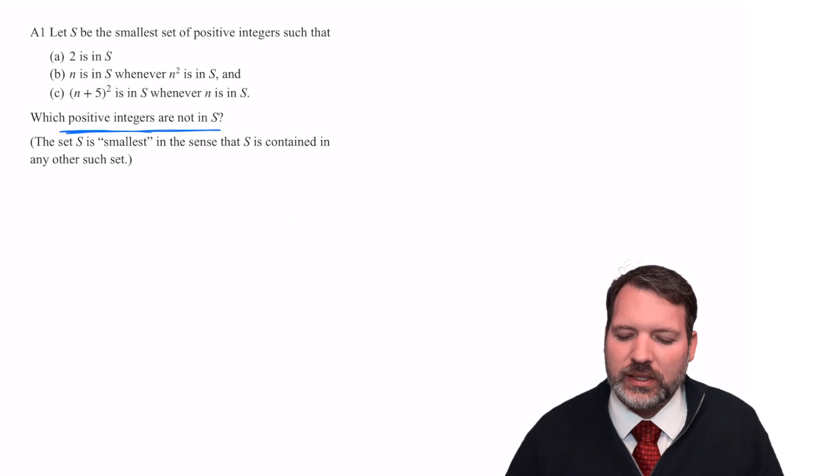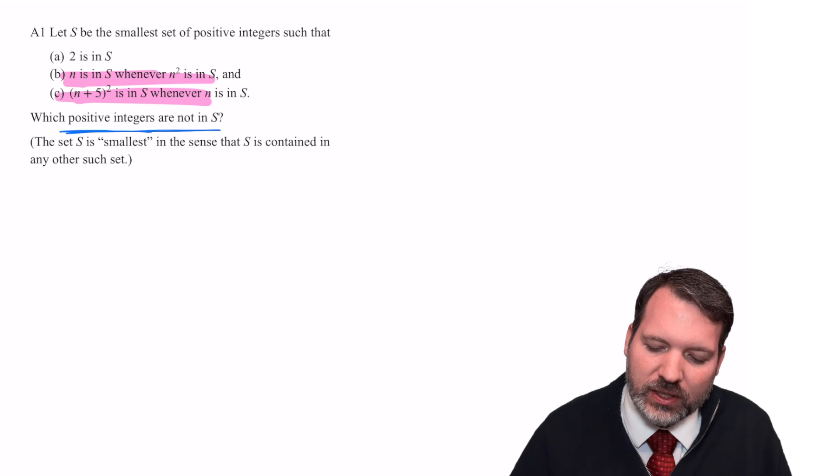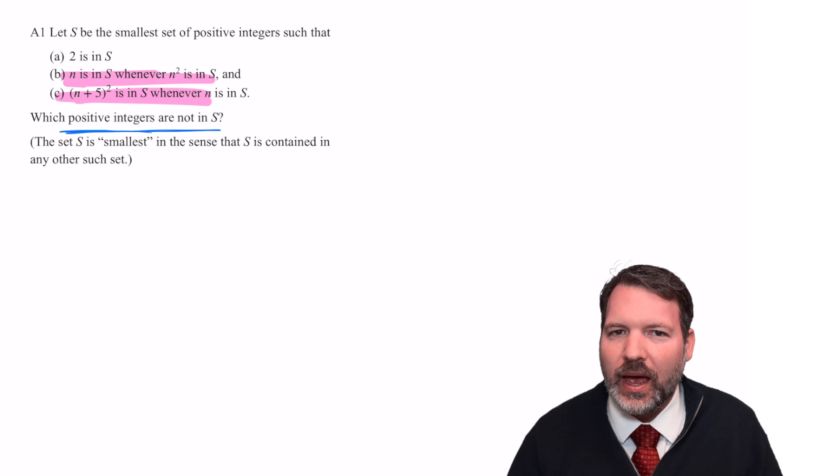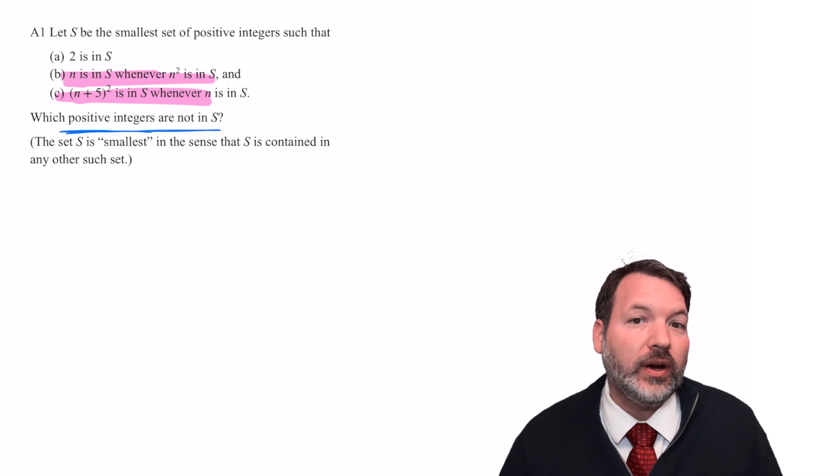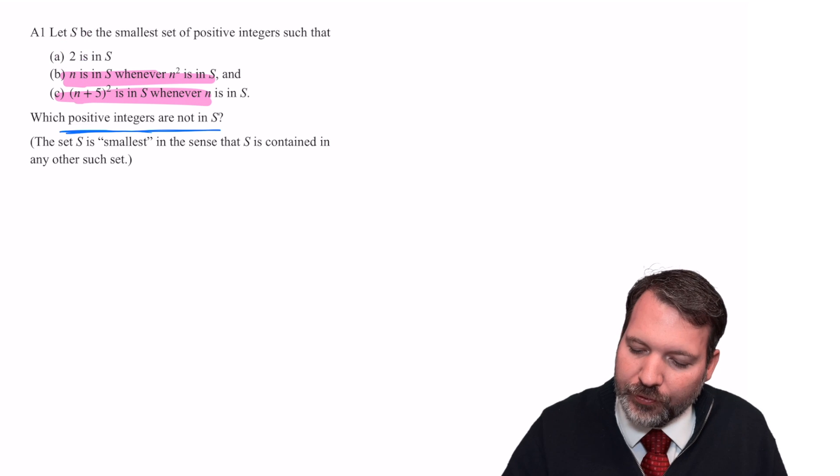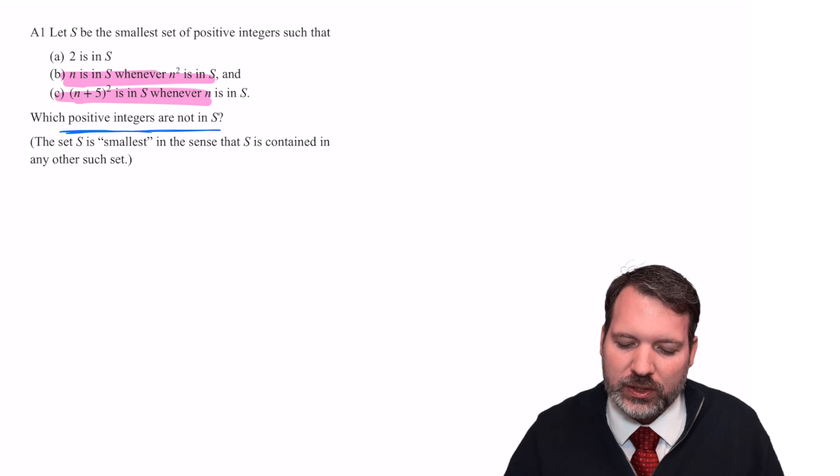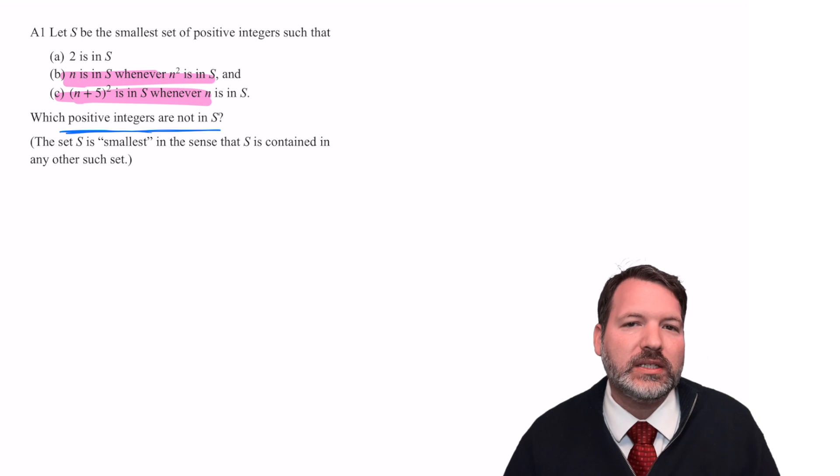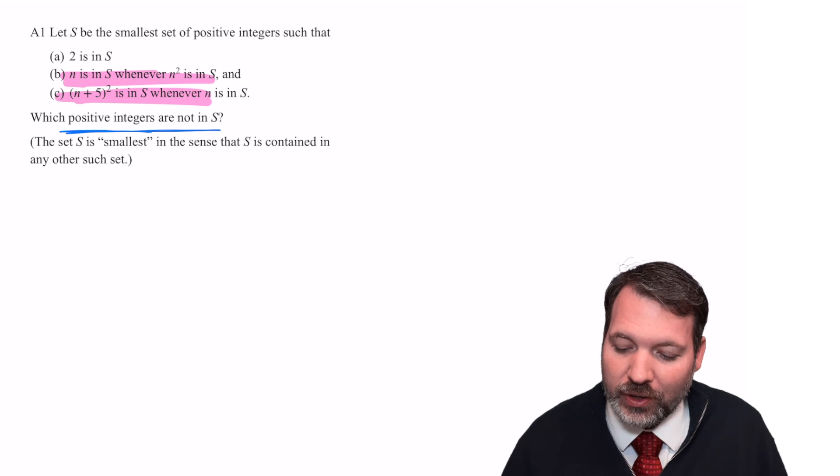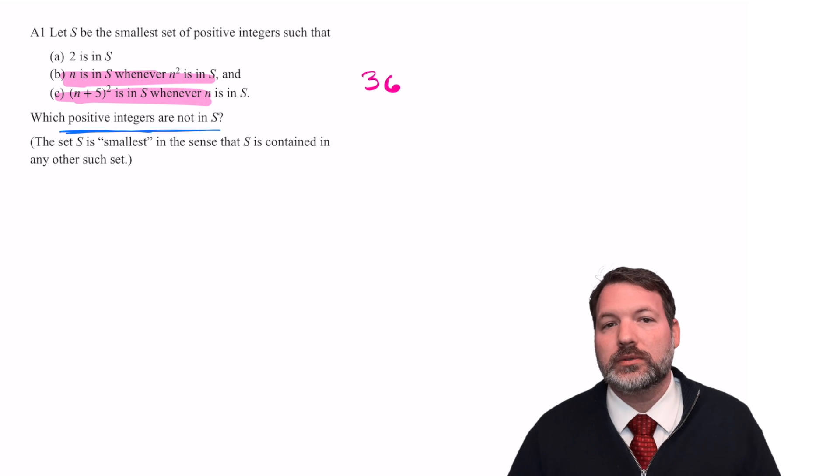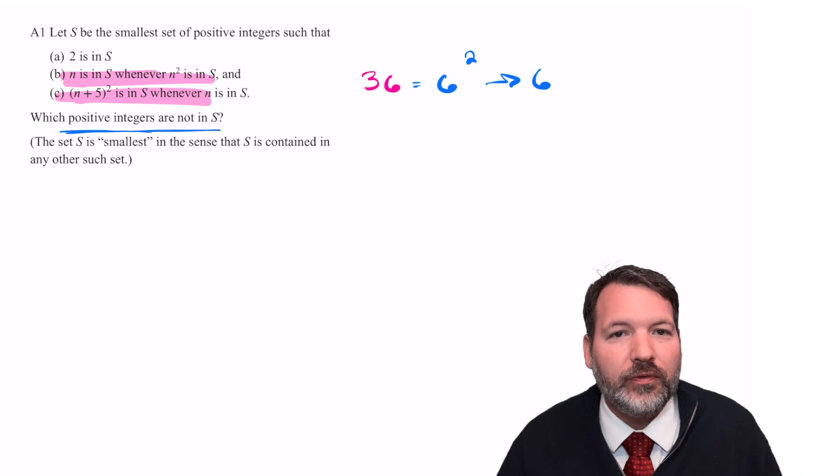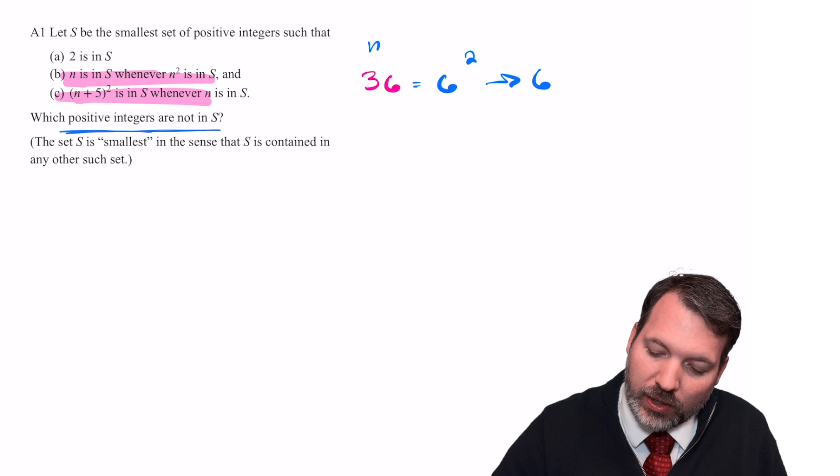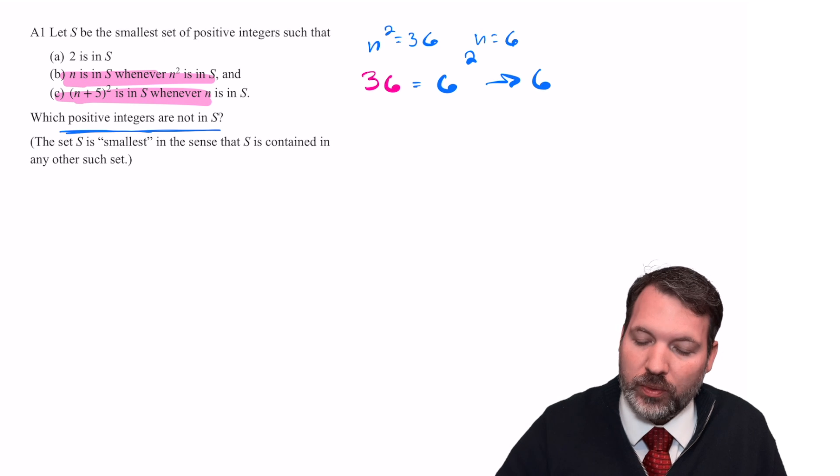So let's do a little legwork before we get to the calculation part. Let's specifically look at these two rules here. N is in S whenever N squared is in S, and then N plus 5 squared is in S whenever N is in S. We'll actually ignore the 2 for now because 2 is not a perfect square, so this first rule wouldn't really apply to 2 itself. But let's just imagine there is some perfect square in the set like 36. So let's just say S contains 36. 36 is the square of 6, and so that must mean that 6 itself is in the set. So N squared in that case would be the 36 and N would be 6.